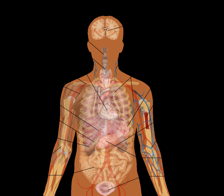Respiratory system: the organs used for breathing — the pharynx, larynx, trachea, bronchi, lungs and diaphragm. Skeletal system: structural support and protection with bones, cartilage, ligaments and tendons.